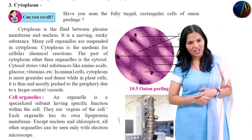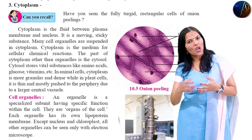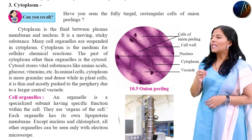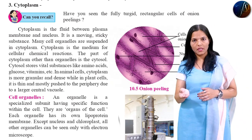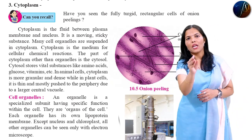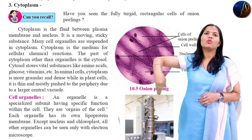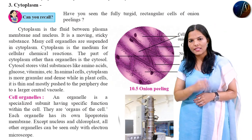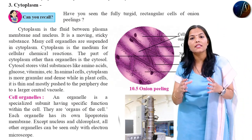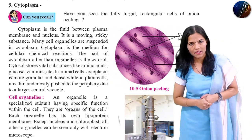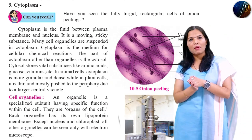To explain cytoplasm: the dotted portion in the plant or animal cell is called cytoplasm. Cytoplasm is the fluid which is present between the plasma membrane and the nucleus. In the plant cell, the nucleus is in the central position. Outside, you have the plasma membrane and cell wall, and in between is the cytoplasm.